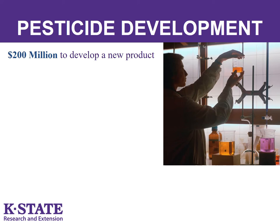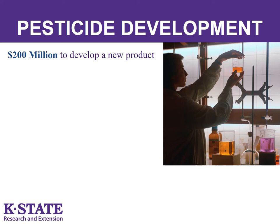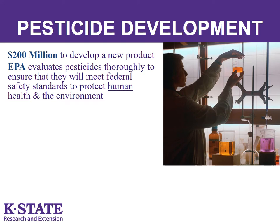Pesticide development is very costly and takes between 10 and 15 years of testing and reporting before a product is brought to market. The EPA, the Environmental Protection Agency, oversees this process and reviews this data for safety. Data that must be generated is extensive, and specific data requirements are listed here.